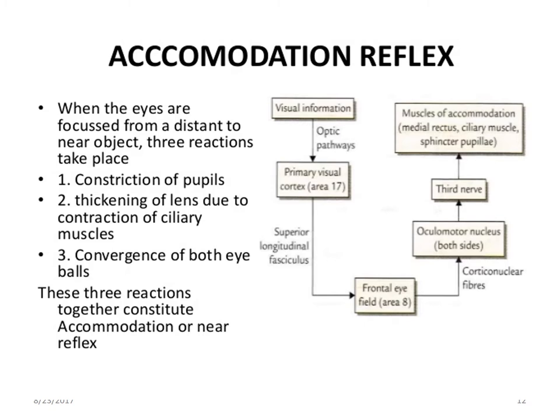To summarize the accommodation reflex: when the eyes are focused from a distant to a near object, there are three major reactions that take place. Number one, constriction of pupils — this is to sharpen the image formed onto the retina. Next is the thickening of the lens due to the contraction of the ciliary muscles, which increases the curvature of the lens — increased convexity. This is also followed by convergence of both eyeballs, brought about by the contraction of the medial recti of both eyes. These three reactions together constitute the accommodation or near reflex.